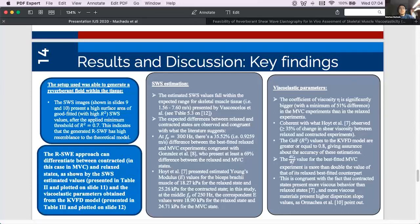For instance, the estimated SWS values fall within the expected range for skeletal muscle tissue and they present differences between relaxed and contracted states that are congruent with the literature as shown in the slides that mention, for example, the work by both Hoyt et al. and González et al. On the other hand, if we talk about the viscoelastic parameters, the coefficient of viscosity eta is significantly bigger in the MVC experiments than in the relaxed experiments, indicating more viscous behavior for the contracted state.